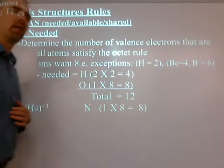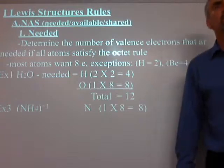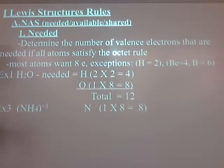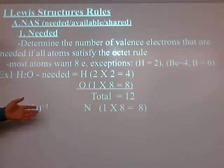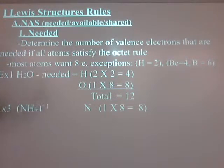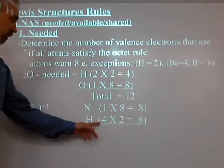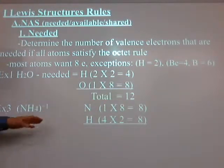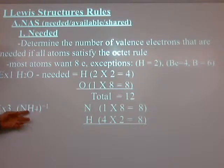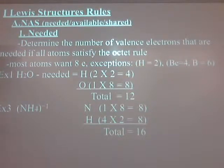Next is NH4+, which is a polyatomic ion with a net charge of plus one, meaning it has too few electrons. For N and H: nitrogen wants eight, and each of the four H's wants two, so the total electrons needed would be 16. Now we get to the 'available' — we don't always have 16 or 12 available in every case.